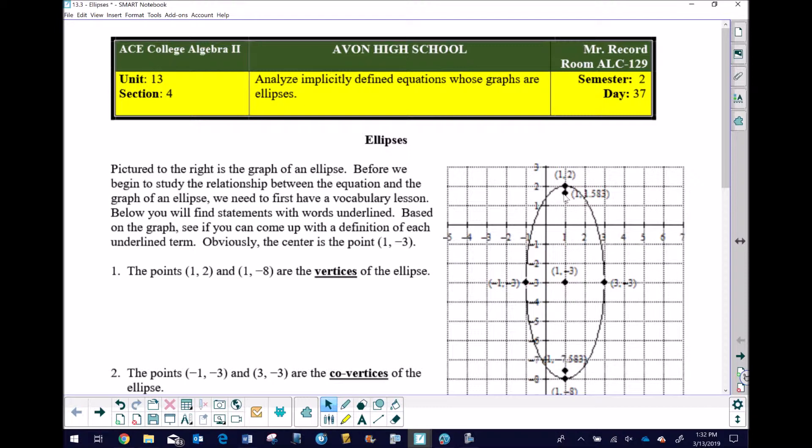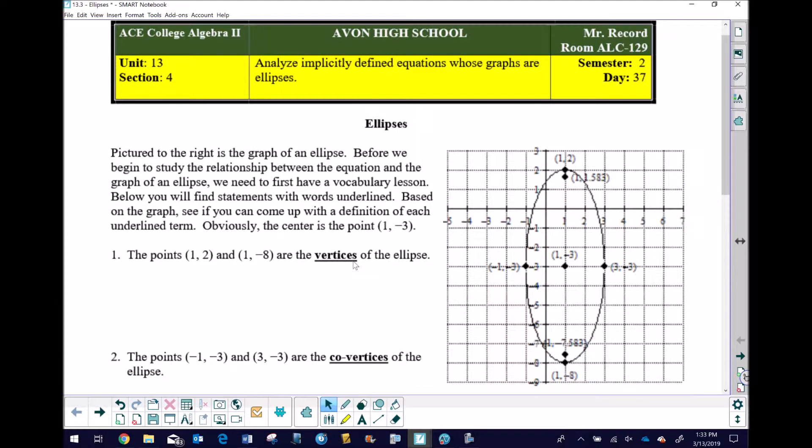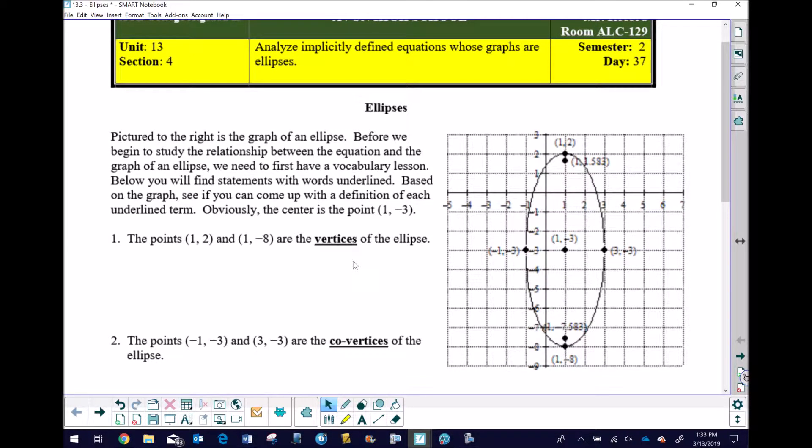So what we have right here, pictured to the right, is the graph of an ellipse. Before we begin to study the relationship between the equation and the graph of an ellipse, you first might want to look at a little bit of vocabulary. Here you're going to find some statements with words that are underlined. Based on the graph, we want to see if you can come up with a definition of each of the underlined words. Obviously, we start with the center point, which is negative 1, 3. It's probably likely at this stage you guys have already studied circles. Circles have centers. Ellipses have centers just the same. In fact, the formula of an ellipse will probably be in a form very similar to the center radius form of a circle, making the center very easy to find.